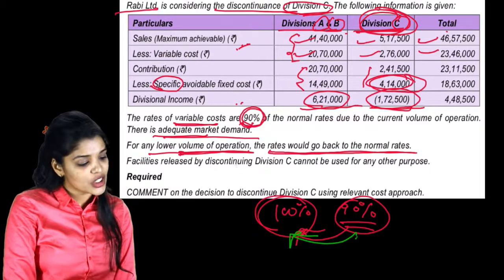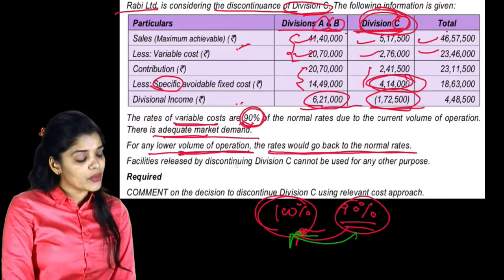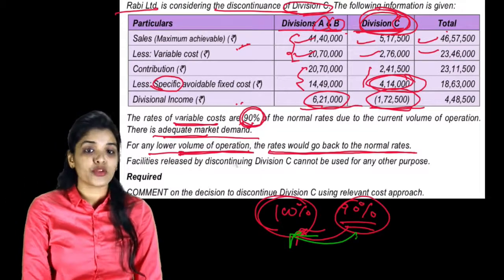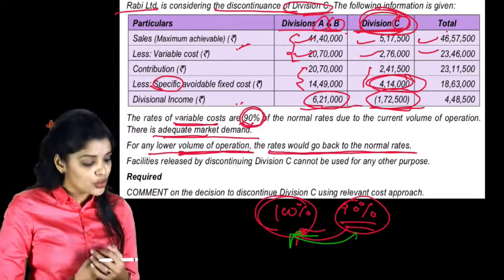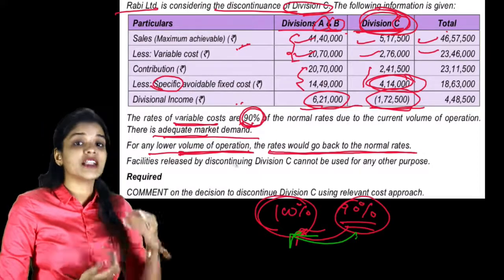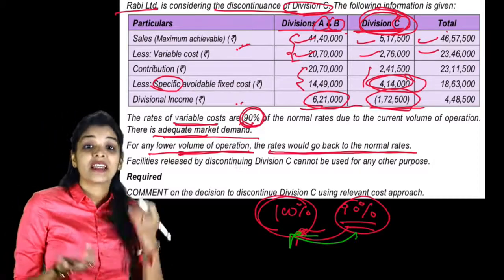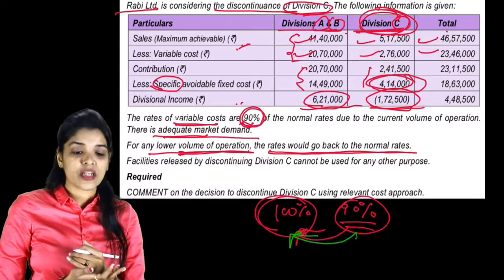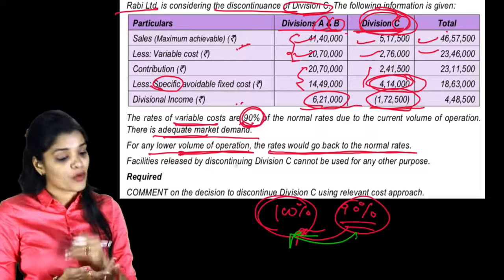Required: Comment on the decision to discontinue Division C using relevant cost approach. You have to use relevant cost approach and comment whether the decision to discontinue C is correct or not according to relevant cost approach.